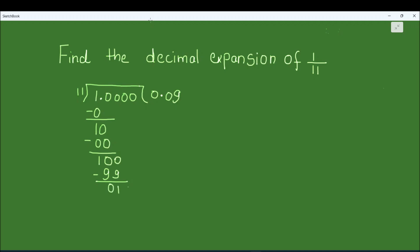We drop down the next 0, giving us 10 again — the same as a previous step. So 11 times 0 is 0, and 10 minus 0 is 10. We drop down another 0 to get 100 again, and 11 times 9 is 99.